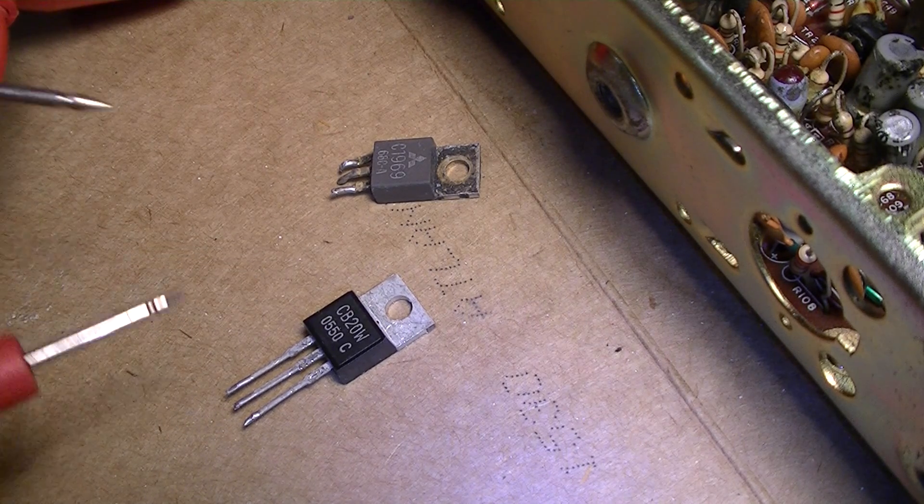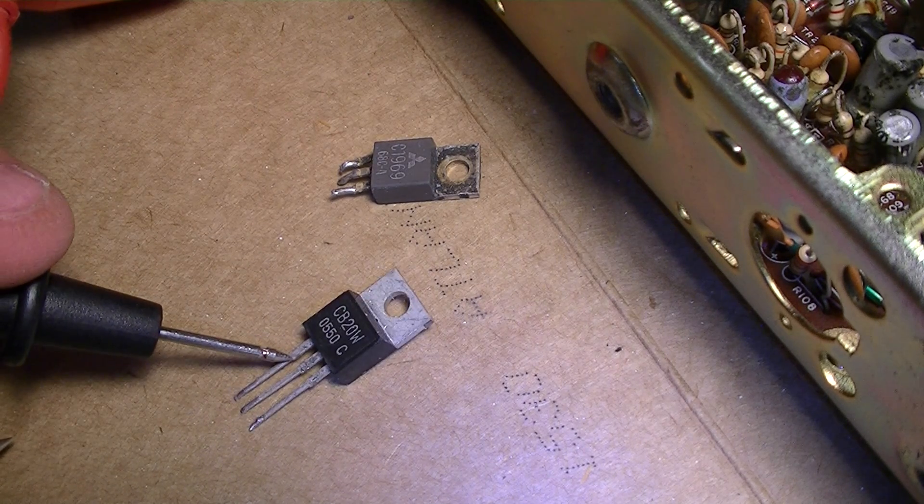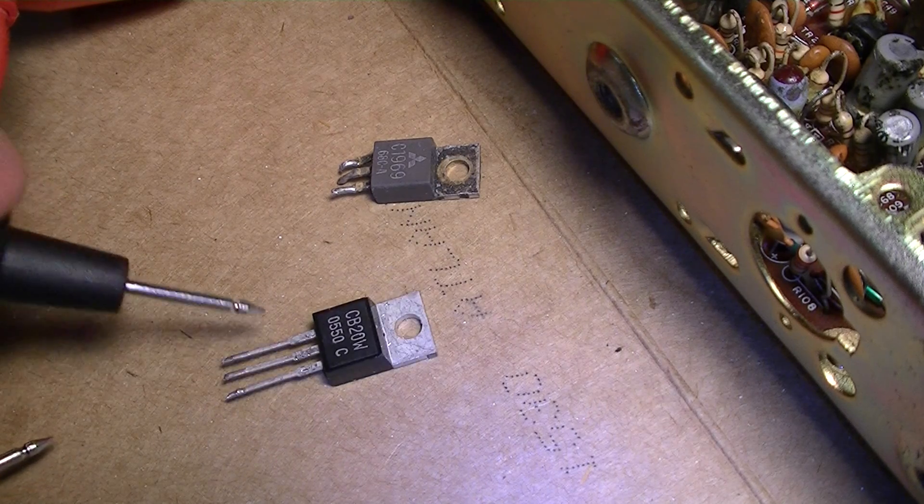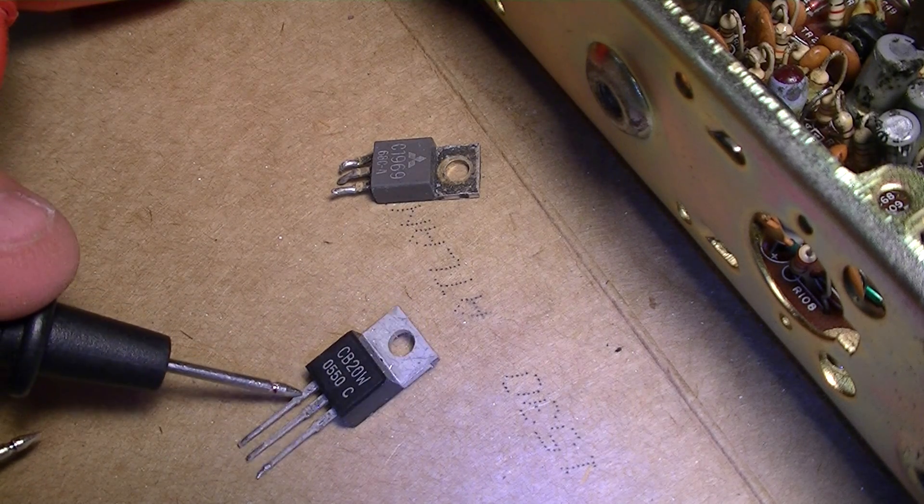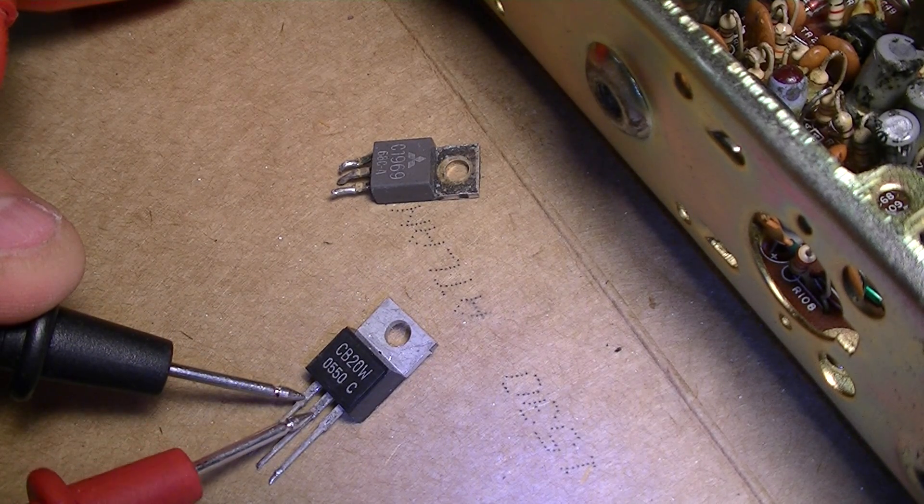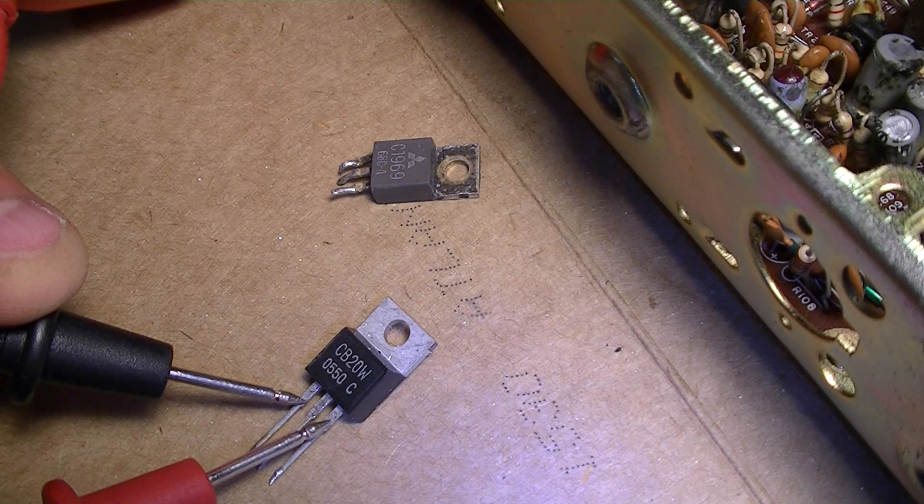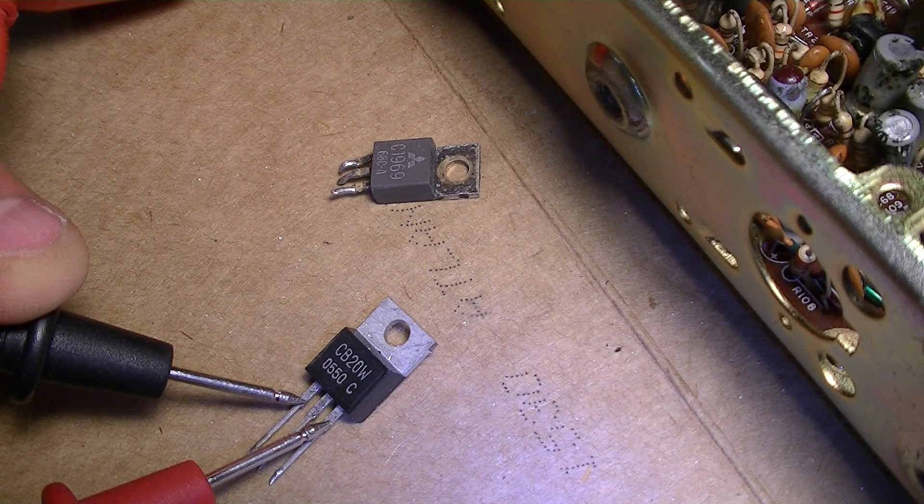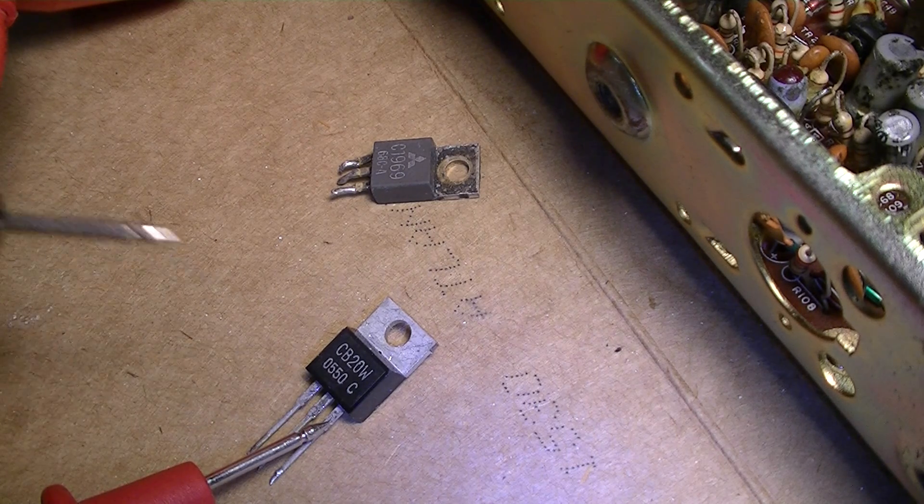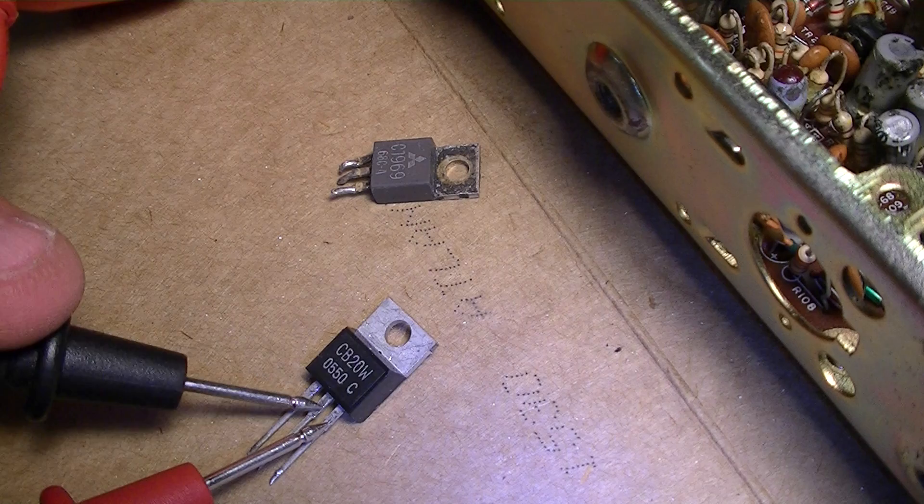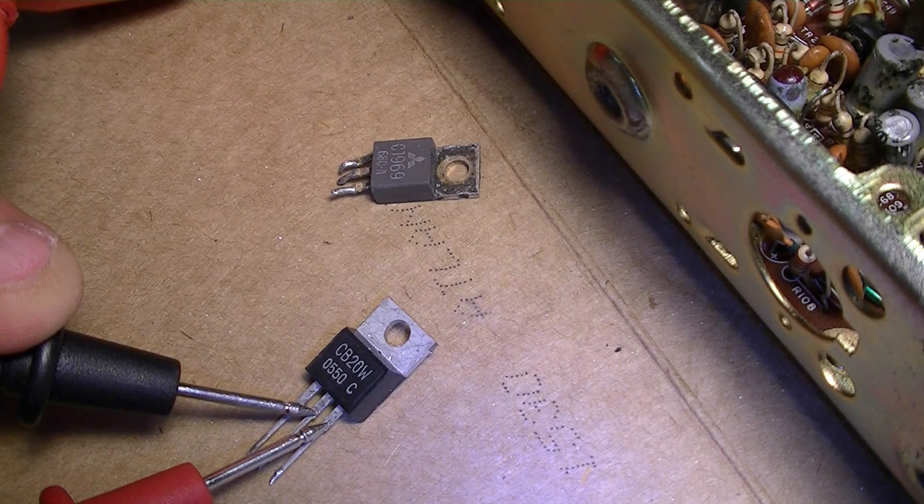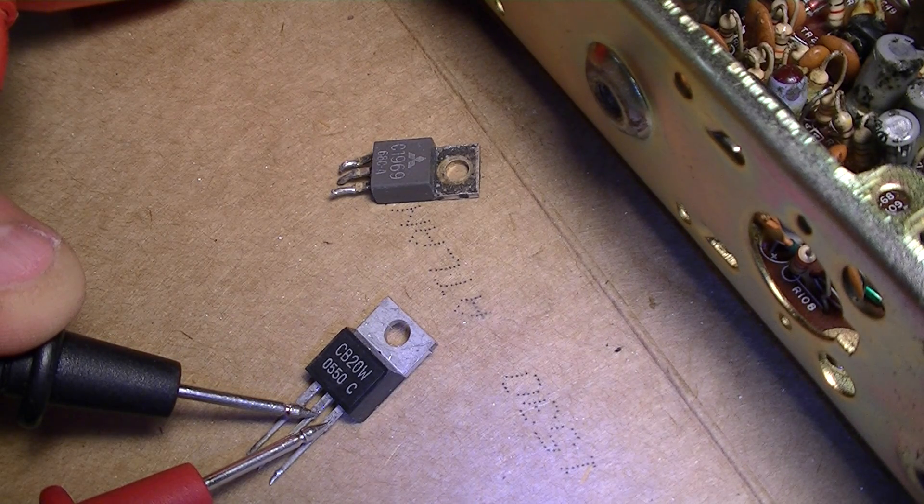Now for those of us who are curious, I put the black lead on the first pin back on the base, take the red lead. My meter reads nothing. The third lead, my meter reads nothing. Move the black to the center, my meter reads 653.